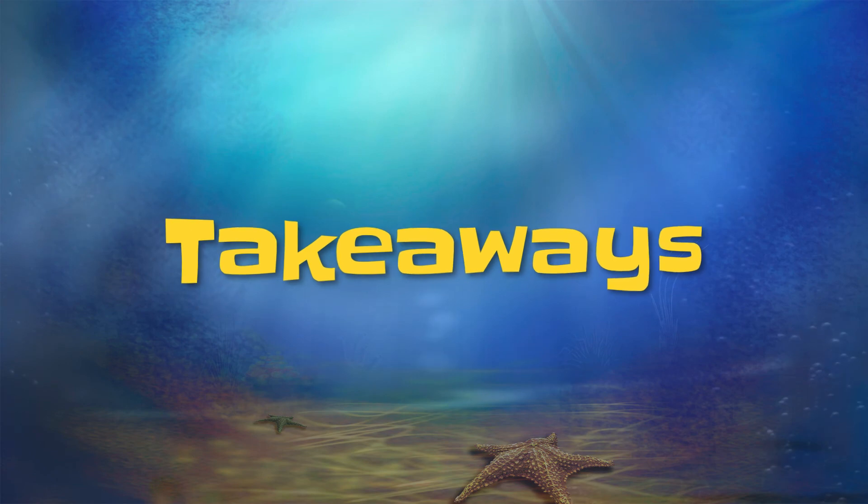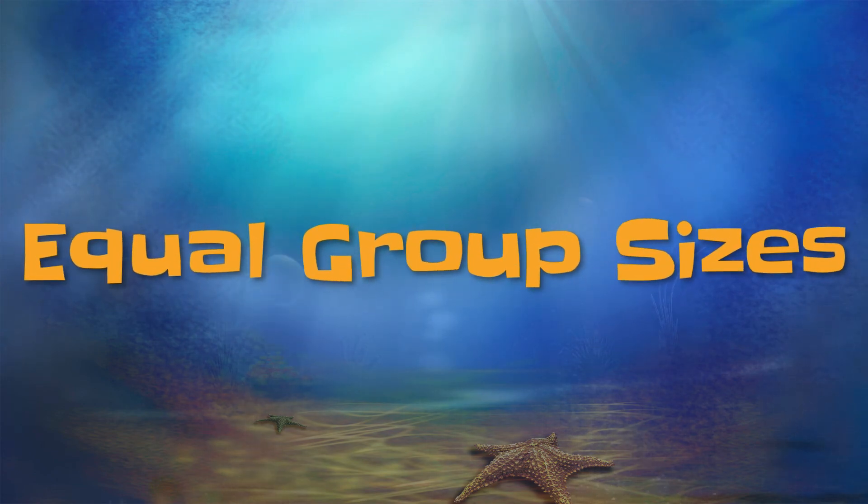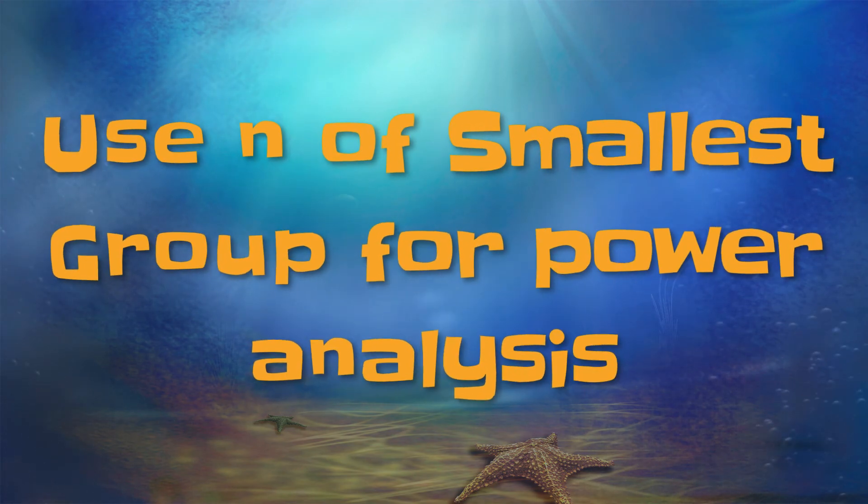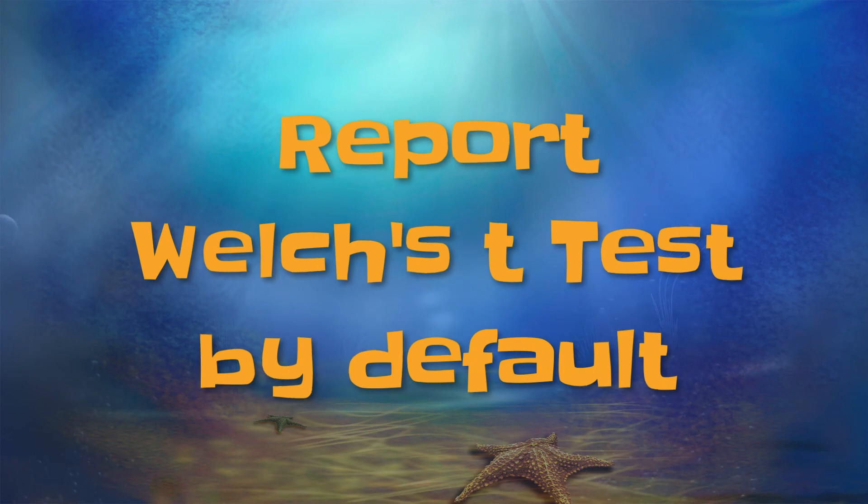So here are your takeaways. Number one, get your group sample sizes as equal as possible. Number two, use the n of the smallest group for power analysis. And number three, report Welch's t-test by default.